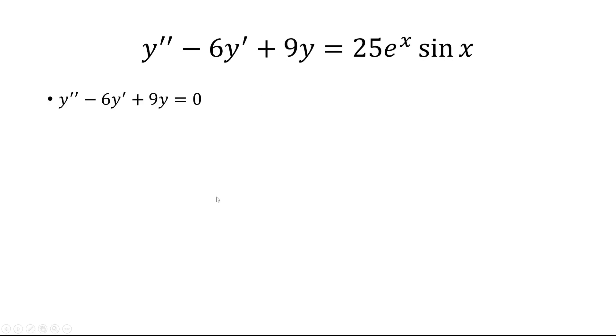So let's first look at the homogeneous solution. We're going to set this differential equation equal to 0. And now we get the characteristic equation, r squared minus 6r plus 9 equals 0. Factor this, we get r is equal to 3.